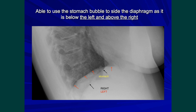Another important aspect is that if you can see the stomach bubble, and the stomach lies below one diaphragm and above another, it must lie below the left hemidiaphragm. In fact the left hemidiaphragm can be seen just here.